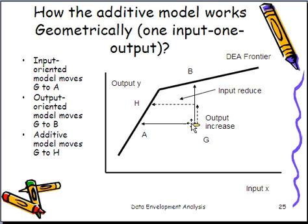Or if you're using an output-oriented model, you increase the output all the way to B on the frontier. So that's the benchmark on the frontier. And A is the benchmark on the frontier for the input-oriented model. Now, if you use the additive model, what you do, you're going to increase the output a little bit and then you're going to reduce the input a little bit. And you end up at a point on the frontier here.